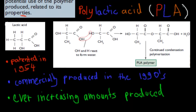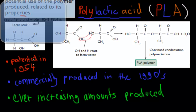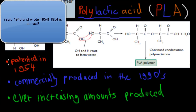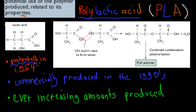We're going to cover the history of PLA — polylactic acid — as our named biopolymer. It was patented in 1945, meaning someone went to the patent office to claim all rights to this polymer. It wasn't really used properly until the 1990s, when it was commercially produced on a larger scale to make money.